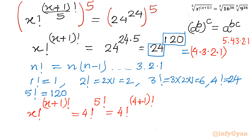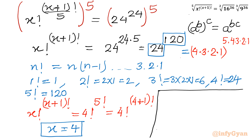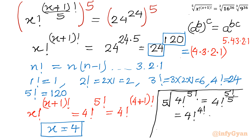Simply, now comparing both sides, we can conclude that x must be equal to 4. So our answer becomes x equal to 4. Let us check the LHS for this value: the 5th root of 4 factorial raised to the power 5 factorial, with the right hand side being 24 raised to the power 24. Taking the 5th root gives us 4 factorial raised to the power 5 factorial divided by 5. Since 5 factorial over 5 is 4 factorial, we get 4 factorial raised to the power 4 factorial, which is 24 raised to the power 24 — our RHS. Hence, this is verified.